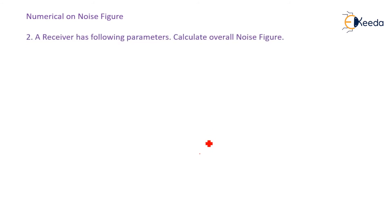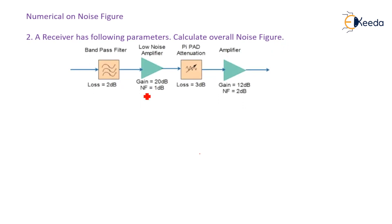Now let us look at another numerical on noise figure. A receiver has the following parameters — calculate the overall noise figure. The receiver section contains a bandpass filter with an insertion loss of 2 dB. Insertion loss means that by inserting the bandpass filter, some power is consumed, contributing a 2 dB loss.